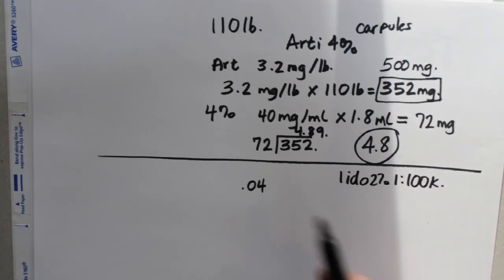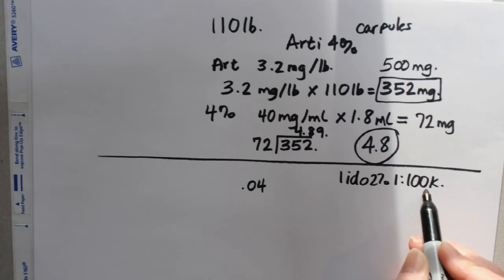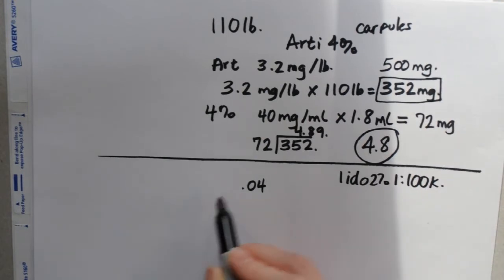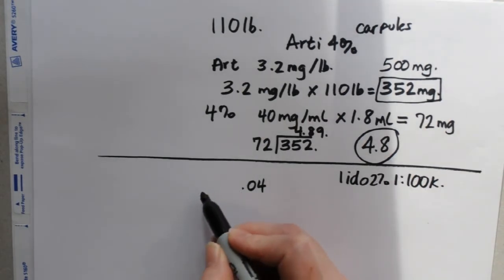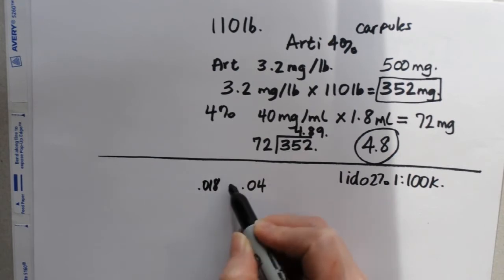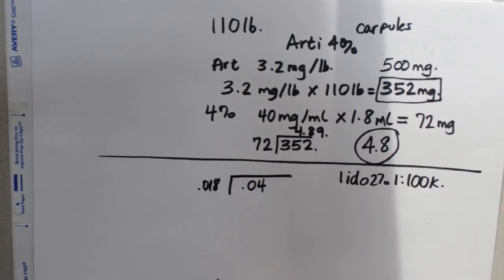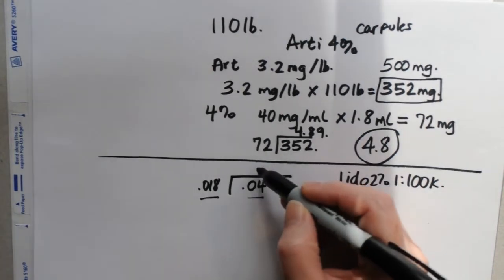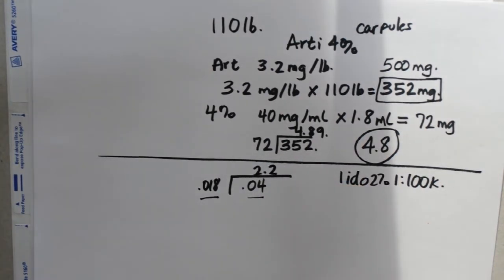So we know that a 1 to 100,000 concentration of epinephrine has 0.018 milligrams of epi. So to calculate how much a heart patient can have, we divide the total number that they are allowed to have by the total milligrams in a single carp. And that will give us our answer in terms of carpules. And what we get is 2.2 carps.